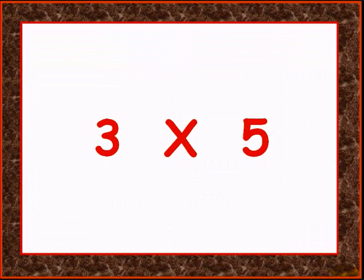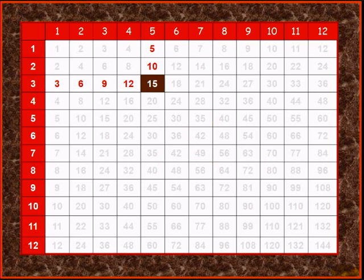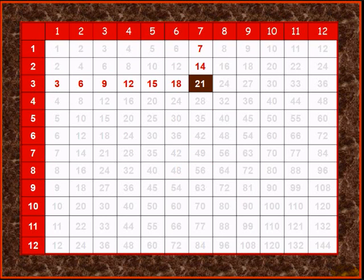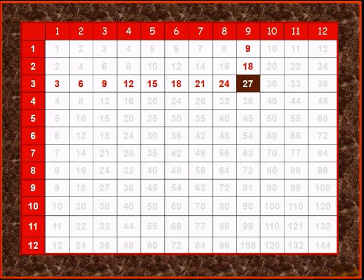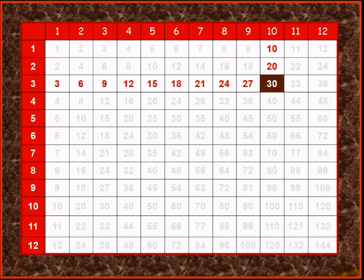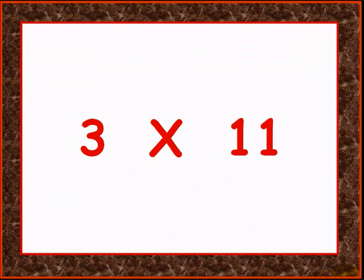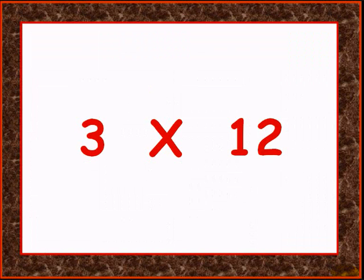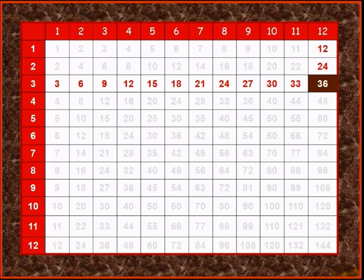3 times 5 is 15, 3 times 6 is 18, 3 times 7 is 21, 3 times 8 is 24. 3 times 9 is 27, 3 times 10 is 30, 3 times 11 is 33, 3 times 12 is 36.